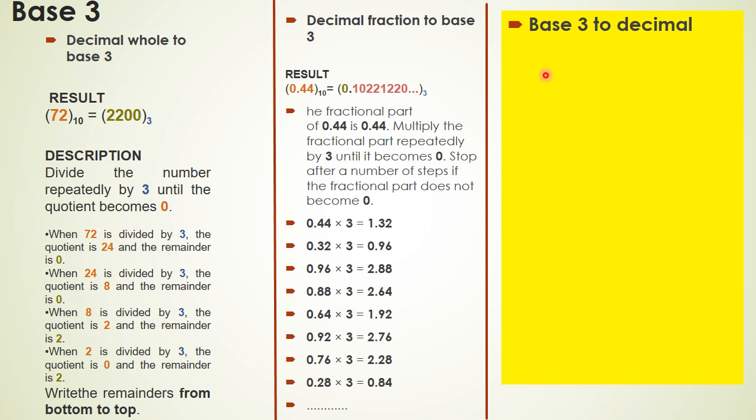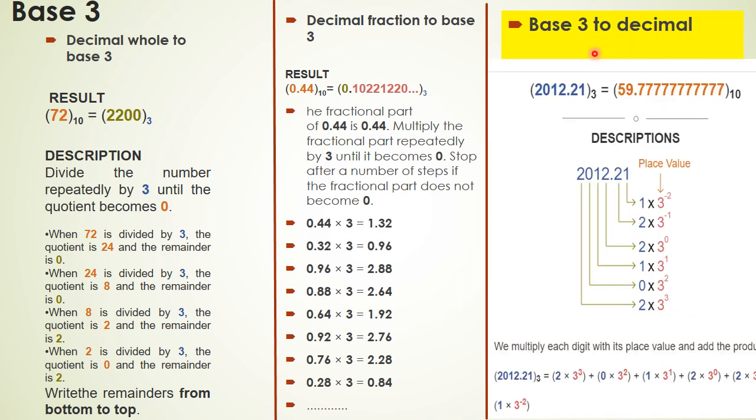Third case: if I want to convert a number of base 3 into decimal, then what will I do? There is a number which is in base 3. I multiply each digit by 3 but according to its weight. For example, you can see the number 2 has a weight of 0, number 1 has a weight 1, number 0 has a weight 2, and number 2 has a weight 3.